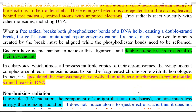Now we look at the repair mechanism employed in eukaryotes to deal with this kind of mutation. In eukaryotes, most species have multiple copies of their chromosomes in the nucleus. During meiosis, particularly during synaptonemal complex formation, fragmented chromosomes may be repaired by pairing the fragmented chromosome with its normal chromosomal homologues. It is speculated that meiosis may have evolved initially as a mechanism to repair the double strand breaks that occur in DNA due to ionizing radiation.